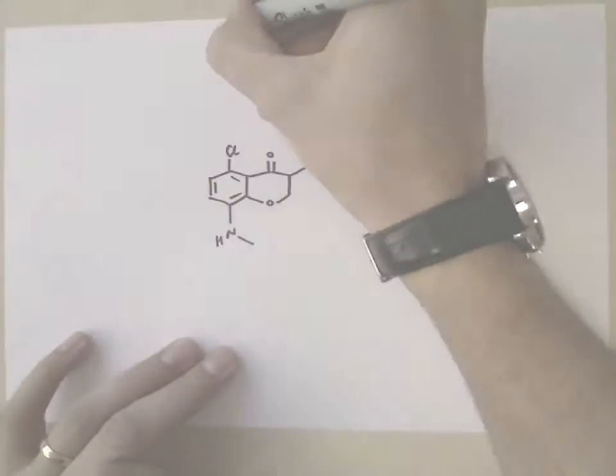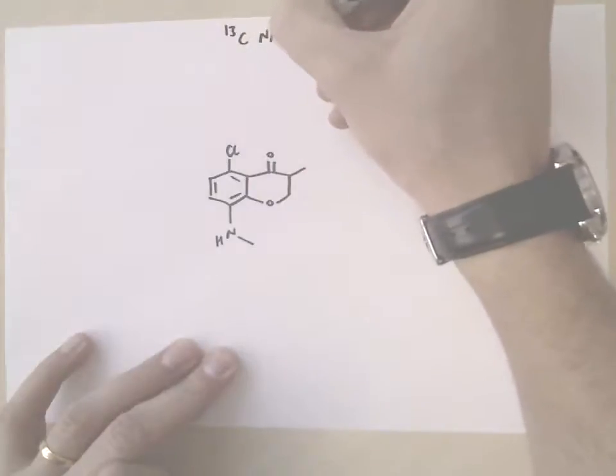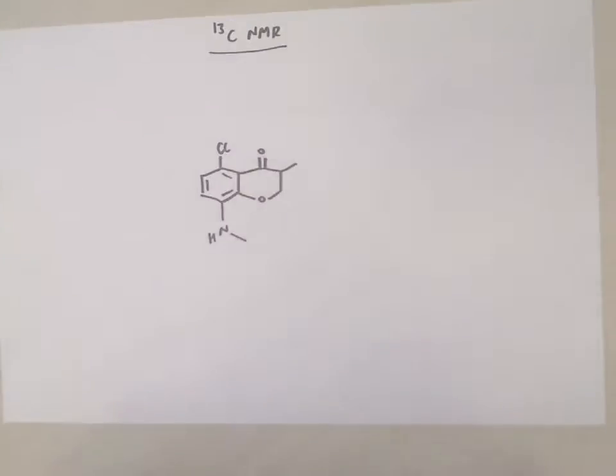Now I want to do the carbon NMR of the same compound that we covered in the proton tutorial. As I mentioned in the lectures, carbon NMR is much simpler to report because you don't have any integration to worry about or splitting, at the level of NMR that we're doing in this course.